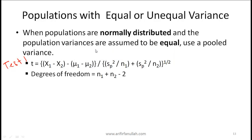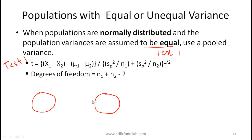Test one applies when populations are normally distributed and population variances are assumed to be equal — we use a pooled variance. To illustrate the test statistic: suppose you drew a sample of 25 from Karachi and a smaller sample of 20 from Lahore, since Lahore is the smaller market.